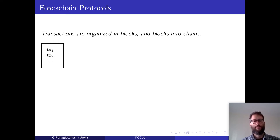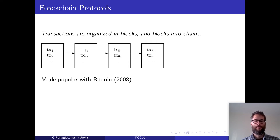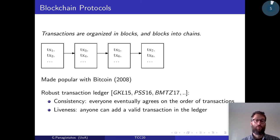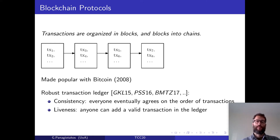Blockchain protocols are characterized by the fact that transactions are organized into blocks and blocks into chains. This type of protocol was made popular with Bitcoin in 2008, which uses the structure to implement what is called a robust transaction ledger, a security notion that mainly satisfies two properties: consistency — everyone should eventually agree on the order of transactions — and liveness, meaning anyone should be able to add a valid transaction to the ledger.